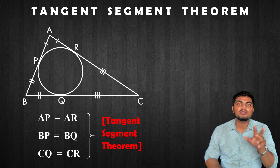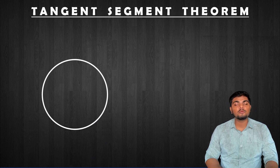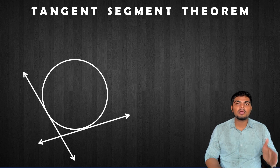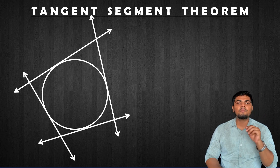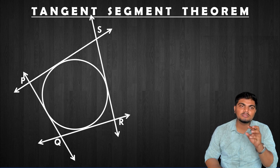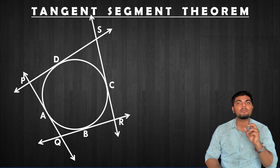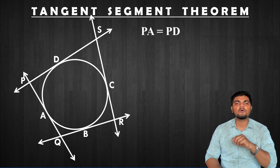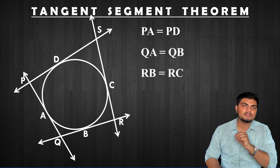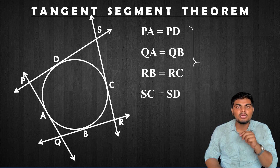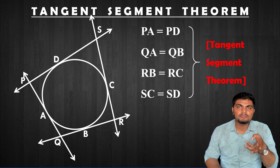On the basis of the tangent segment theorem, two segments from an exterior point are equal. For quadrilateral PQRS, where the sides touch the circle at points A, B, C, D: PA equals PD, AQ equals QB, RB equals RC, and SC equals SD. These are equal segments by the tangent segment theorem.